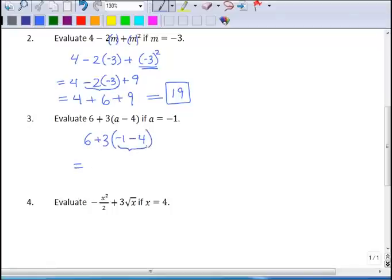Inside parentheses this time, I have something to calculate. Negative 1 minus 4 is negative 5. So 6 plus 3 times negative 5. Parentheses first. We're done with that. Then exponents. We don't have any of those. Then multiplication and division left to right. Here's some multiplication. 6 plus negative 15. Or if you want, you can write that 6 minus 15. And 6 plus negative 15 is negative 9.